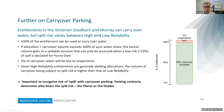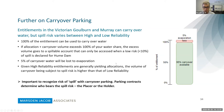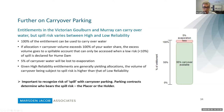Further on carryover parking in Victoria: unlike NSW, 100% can be carried over. But if you exceed 100%, the excess goes into a spillable account, which can only be accessed when there's a low risk of spill — specifically when Hume Dam is less than 10% full — and that can take a few months to occur. You'll also lose water due to evaporation and other losses. Given that high reliability entitlements are generally high-yielding, similar to high security in New South Wales, you have a higher spill risk than with low reliability entitlements.